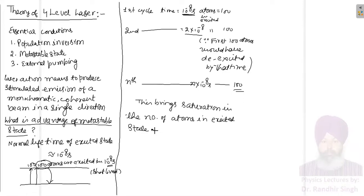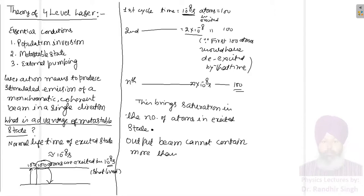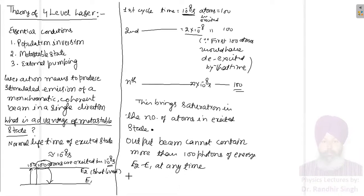According to this example — please do not take it as a standard — since at any time there are only 100 atoms in the excited state, your output beam cannot contain more than 100 photons, because when one atom de-excites, only one photon can be emitted. So there cannot be more than 100 photons of energy E2 minus E1 at any time, meaning the beam intensity will be very small.